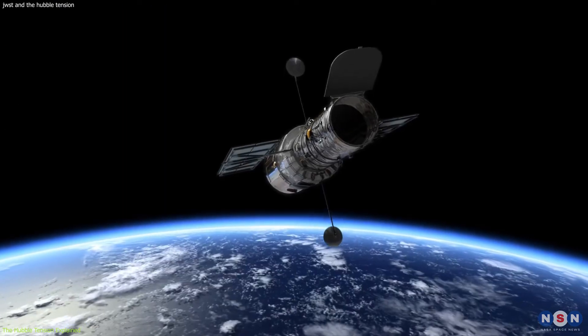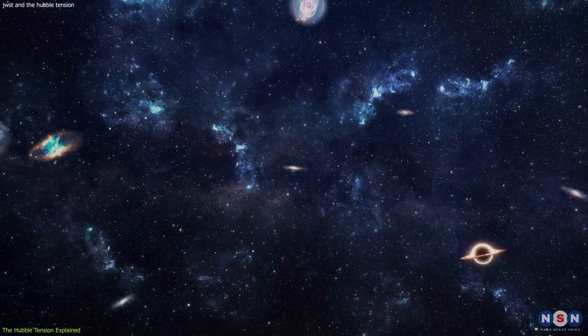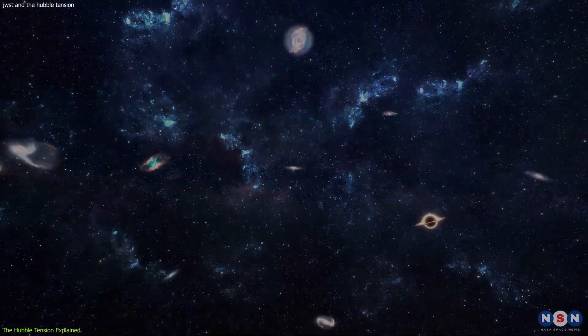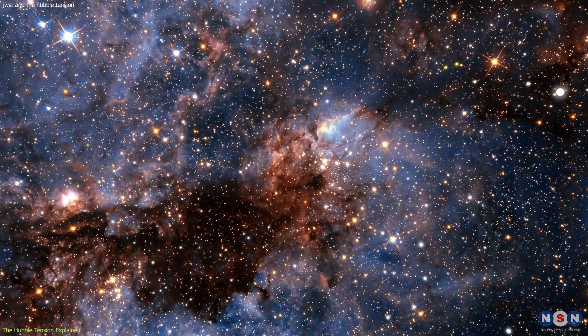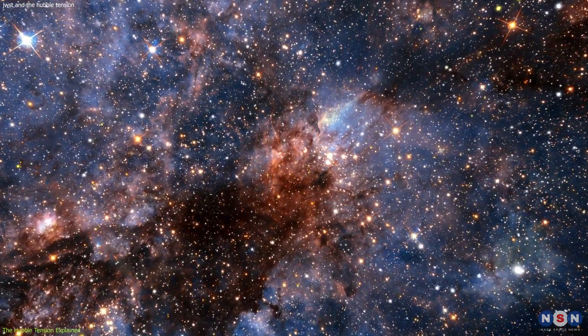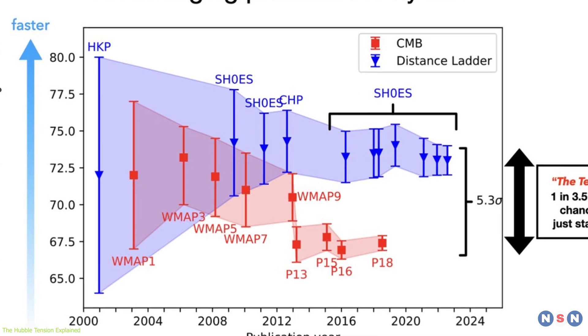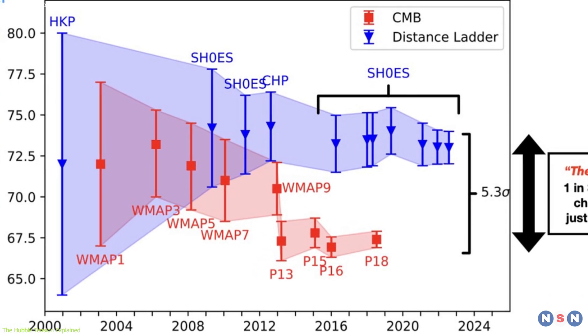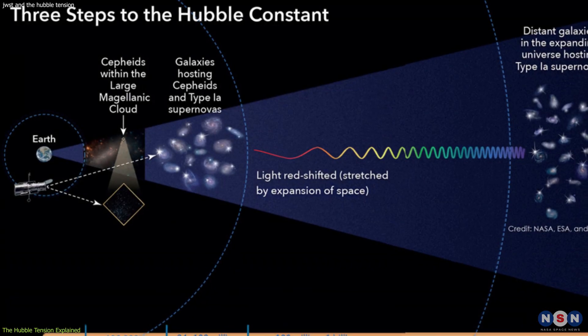The Hubble Telescope has been instrumental in measuring the expansion rate of the universe by observing distant galaxies and supernovae. These observations have provided a wealth of data that has shaped our understanding of the cosmos. However, the Hubble Tension has puzzled astronomers for years. The tension is not a minor discrepancy. It suggests a significant gap in our understanding of the fundamental forces and components of the universe.